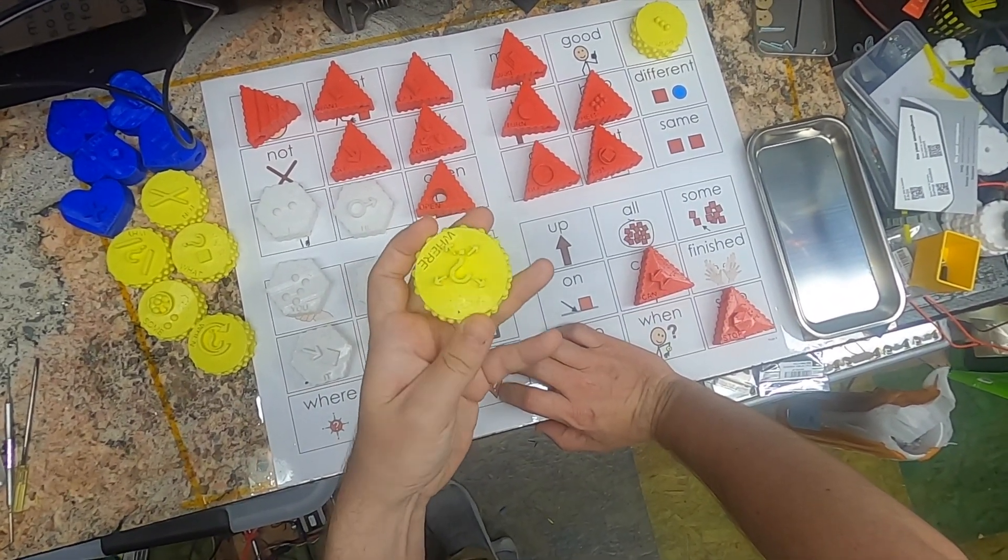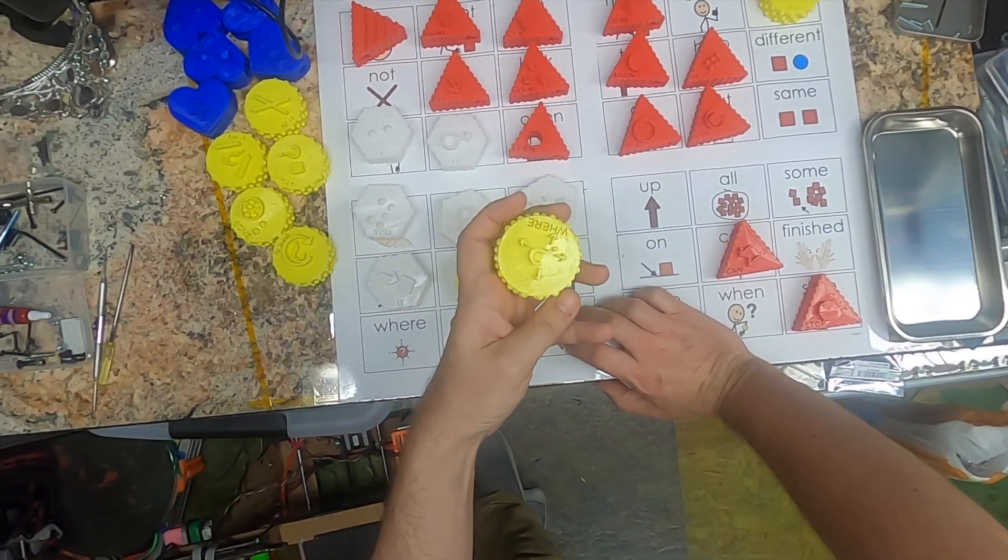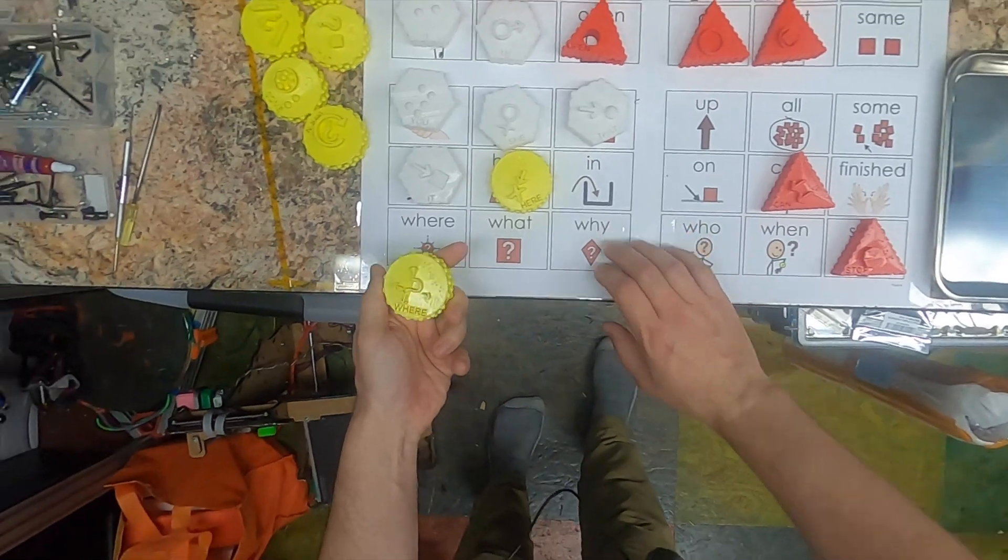The advantage that the 3D symbols have over the communication board is that they're fun to play with, easy to move around, and you can even do a simple matching game with pictures to illustrate the words. Where? Where is where?